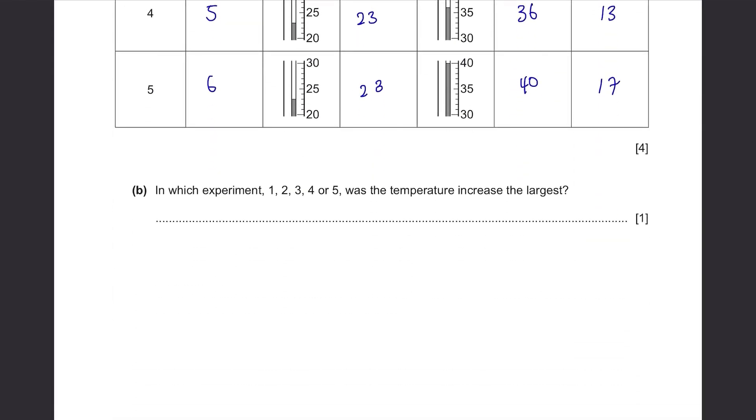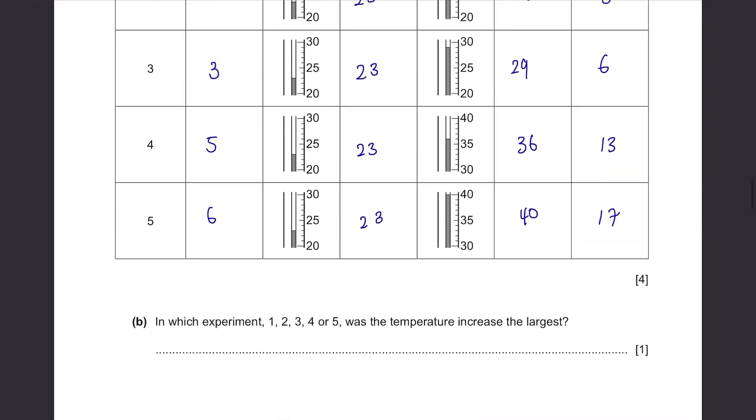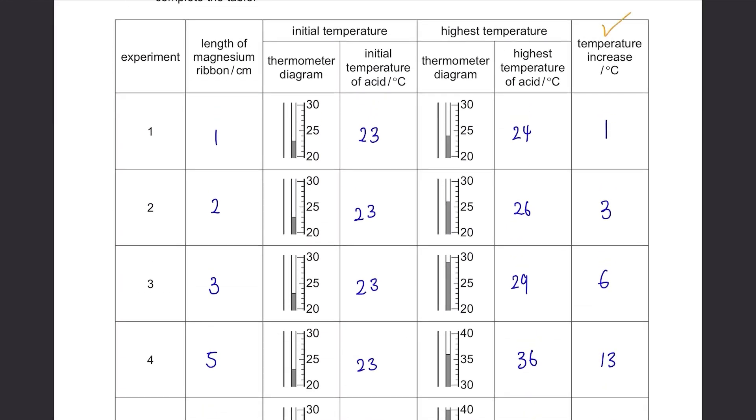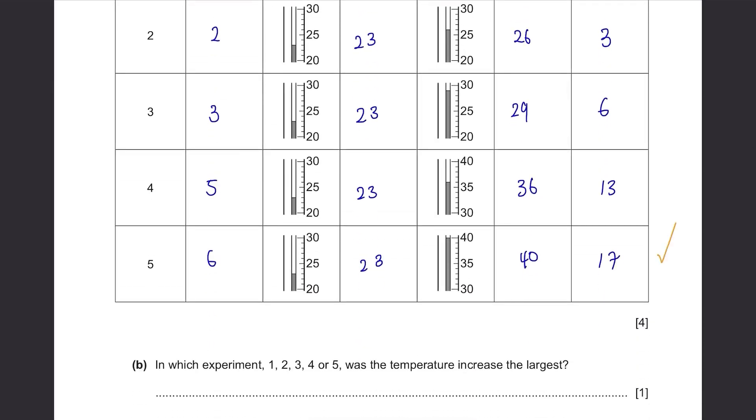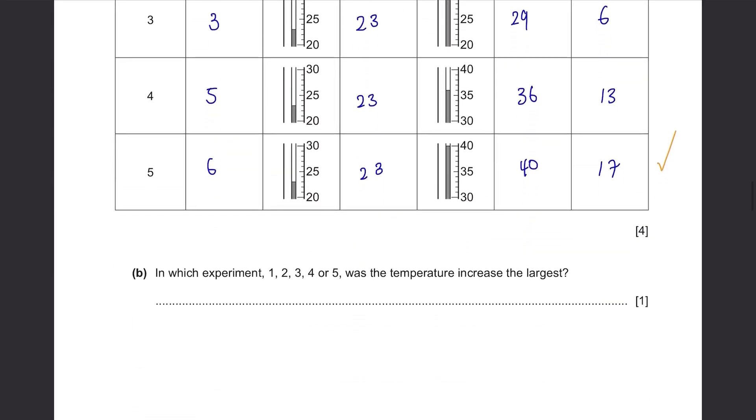Part B: In which experiment 1, 2, 3, 4 or 5 was the temperature increase the largest? Well, just choose the number with the highest temperature increase. It's over here 17, so it's experiment 5.